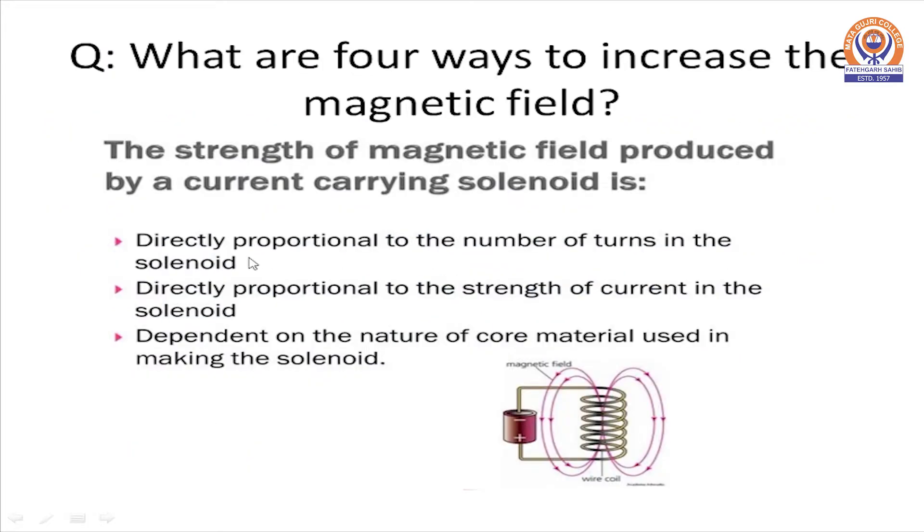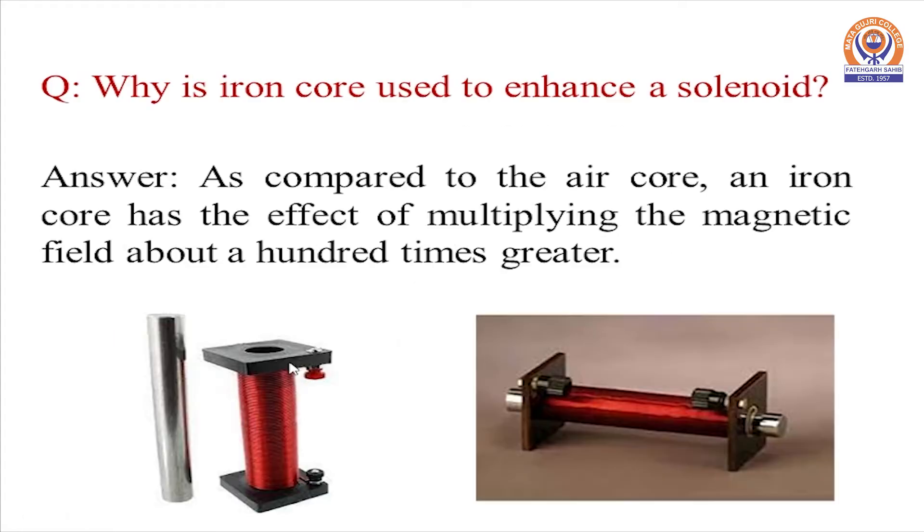Next, what are the four ways to increase the magnetic field? First is, B equals n mu naught i. Number of turns will increase the magnetic field. Strength of current will increase the magnetic field. And nature of core material, that is mu naught, will also make the solenoid more effective to magnetic field.